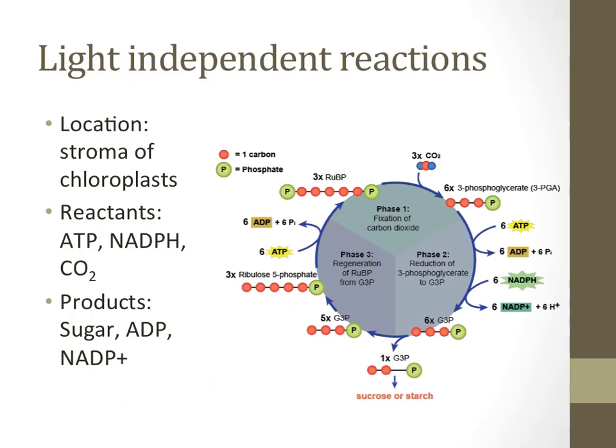In this process, the products of the light-dependent reactions, ATP and NADPH, are used in conjunction with carbon dioxide gas to produce sugar. These high-energy molecules are used to form the chemical bonds between the sugar molecules required for the cell.